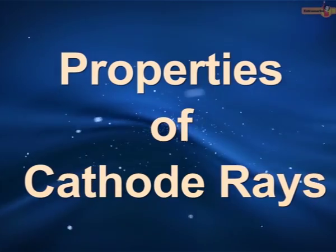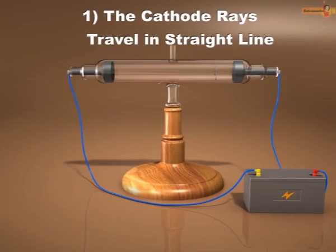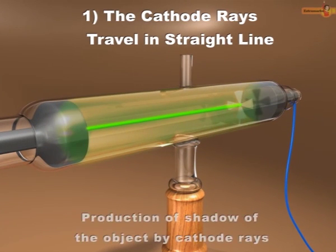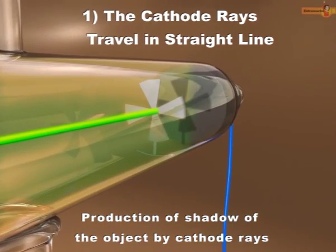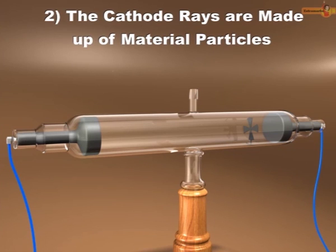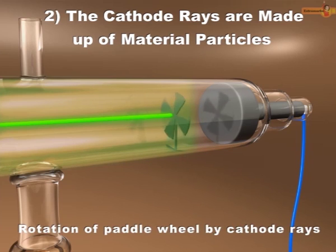Now let's discuss some of the properties of cathode rays. The cathode rays travel in a straight line. When an object is placed in the path of cathode rays, a sharp shadow is produced on the glass wall. The cathode rays are made up of material particles. Cathode rays travel with a high speed almost equal to the speed of light and possess kinetic energy. If a light paddle wheel is placed in the path of cathode rays, the wheel begins to rotate.